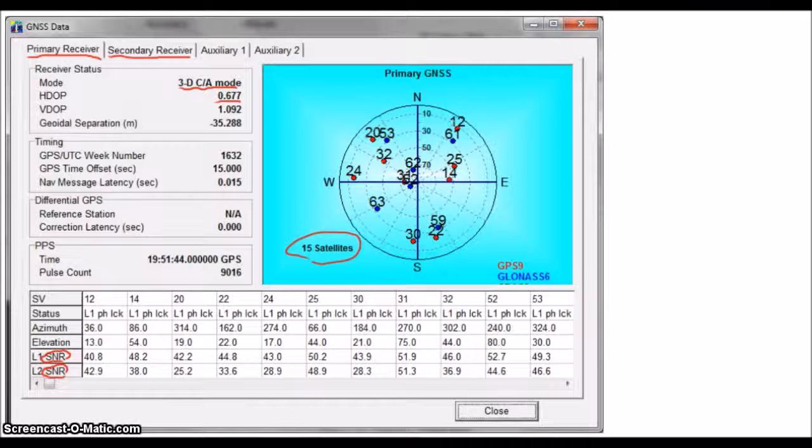Finally, we have an HDOP and VDOP of 0.677 and 1.092, respectively. This is excellent for our survey work.